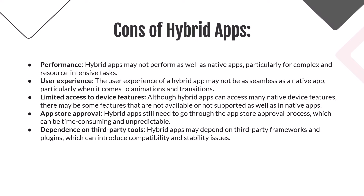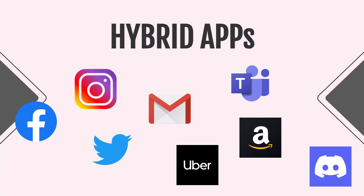Examples of hybrid apps include Twitter, Gmail, Instagram, and Uber. The examples overlap with web and native apps because web apps and hybrid apps have no clear boundaries. These apps are developed based on web technologies, but they are available in multiple app stores and can access device hardware — so they have the pros and cons of both web apps and native apps.